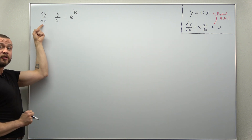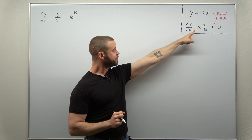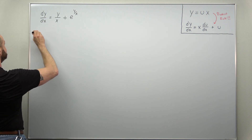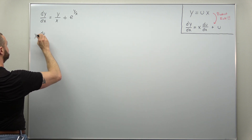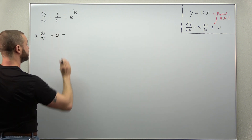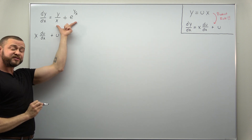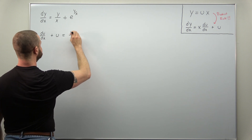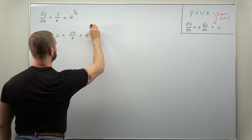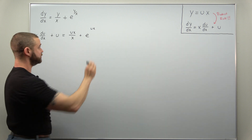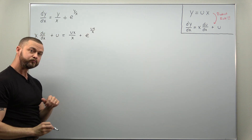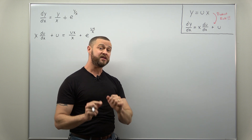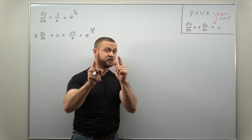First, replace the derivative dy over dx on the left side with the equivalent expression in terms of du over dx and x. We get x times du over dx plus u. On the right side, everywhere we replace y with u times x. In the numerator we get u times x over x, and then plus e to the y, replacing y with u times x over x. This substitution converts the homogeneous equation into a separable equation.